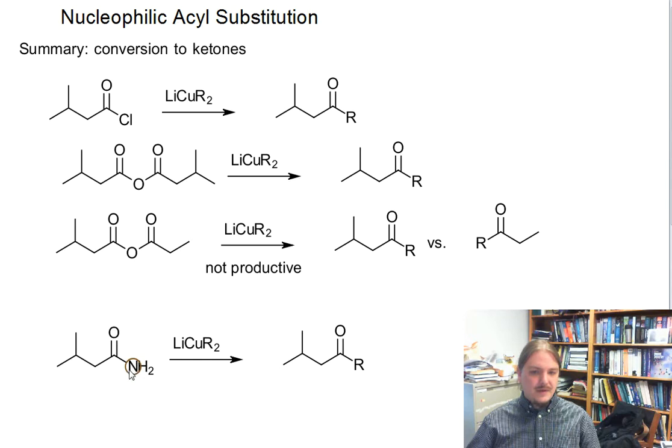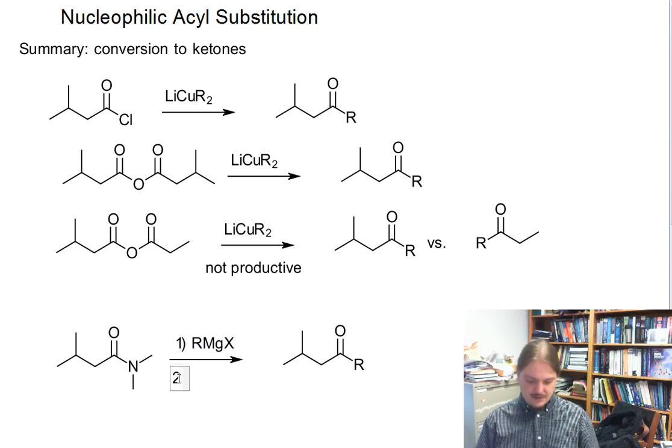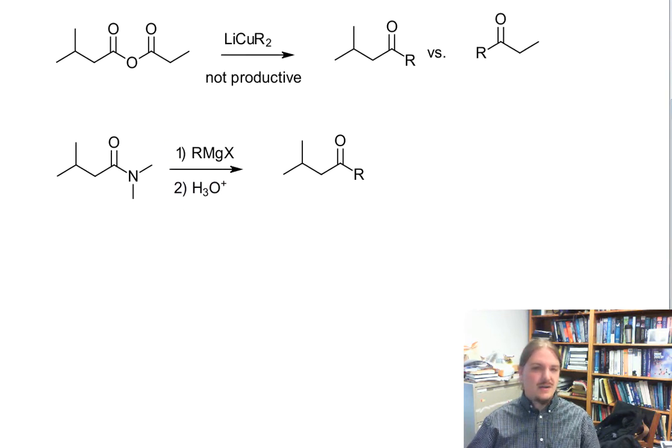But if you have an amide, and that amide has two hydrocarbon groups on it, so it's a tertiary amide, after acidic aqueous workup, you can get a ketone out of this reaction.